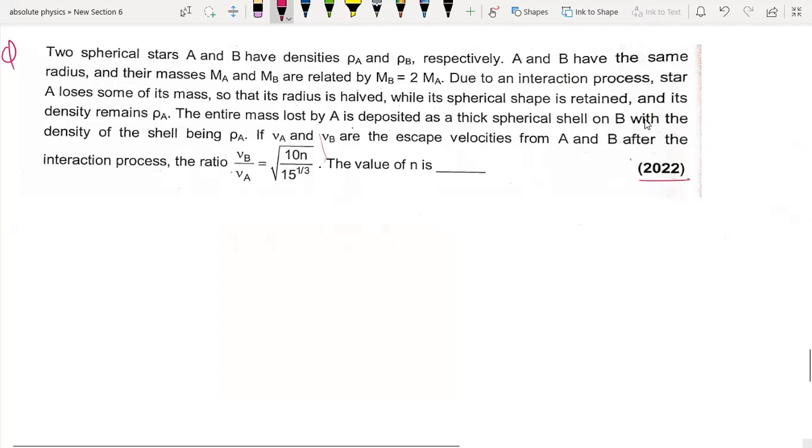The question is: two spherical stars A and B have densities ρA and ρB respectively. A and B have same radius and their masses MA and MB are related by MB equal to 2MA.